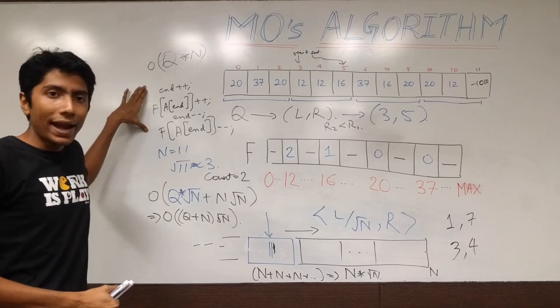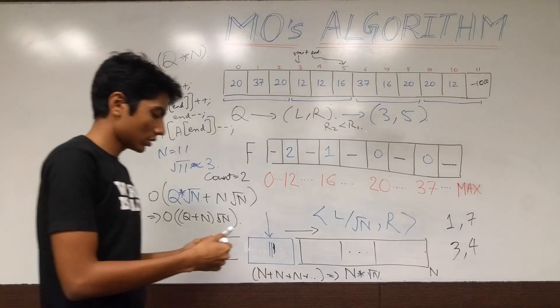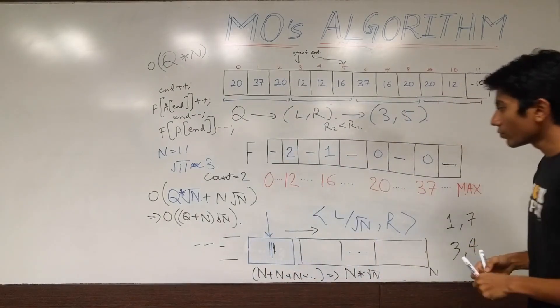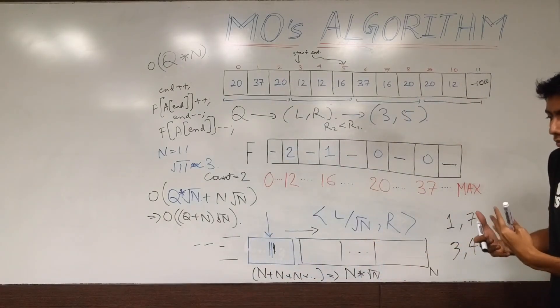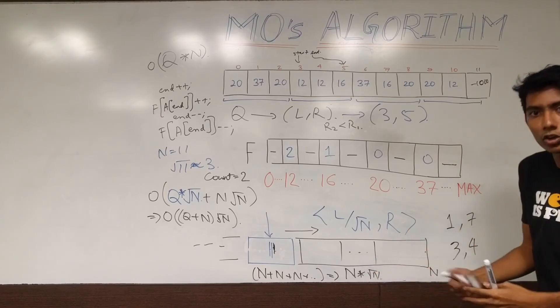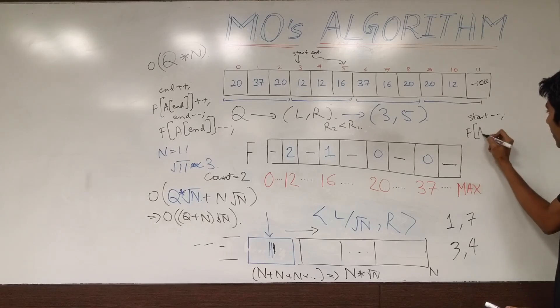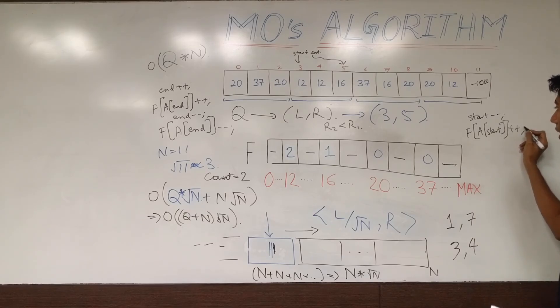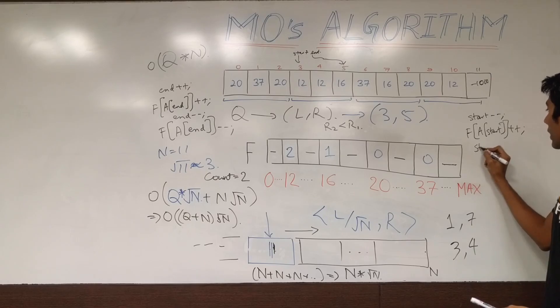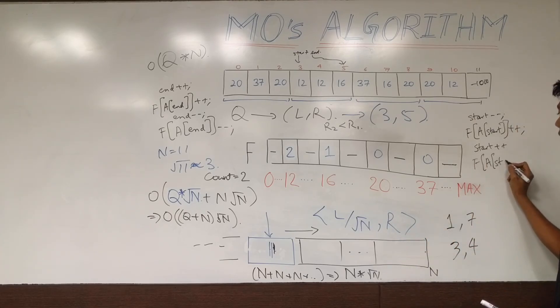Fine. So, we talked about how end behaves. Let's also see how start behaves. So, any time start moves to the left, you're incrementing your range, you're adding to your range. So, if start moves to the left, meaning decrements, then f of a of start has to be added to your array. If start moves to the right, means you're shrinking your range. So, f of a of start has to be decremented.